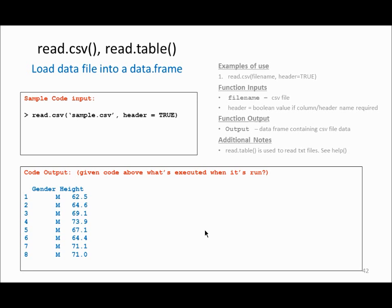The next function is read.csv and read.table, which you can use to load files into a data frame in R. For example, if you have an external file called sample.csv and you want to read the data into R, you can call read.csv with the file name and header equals true, meaning you also want the header from the CSV file. The output will show the header names such as gender and height, along with all the values as a data frame.